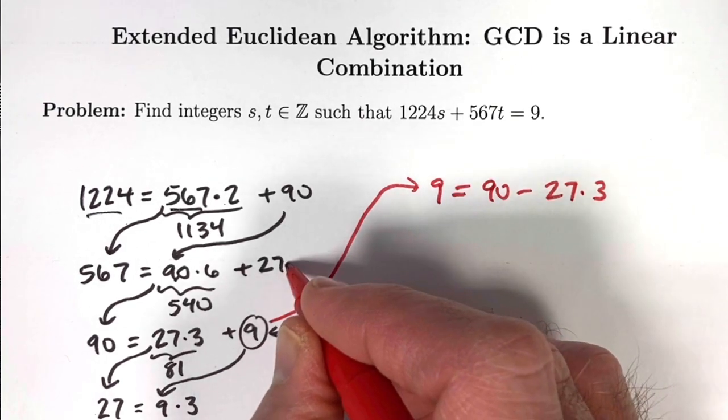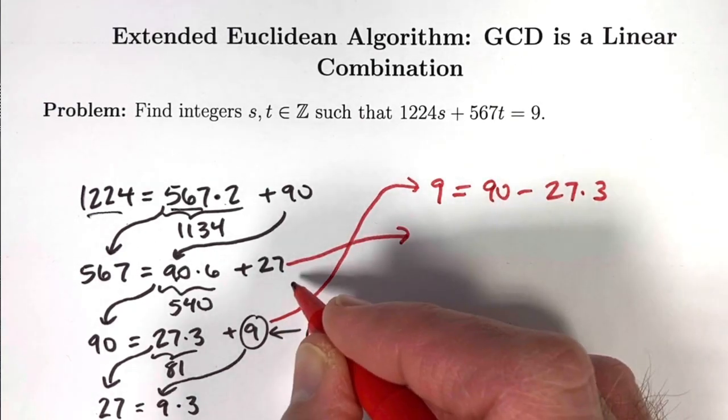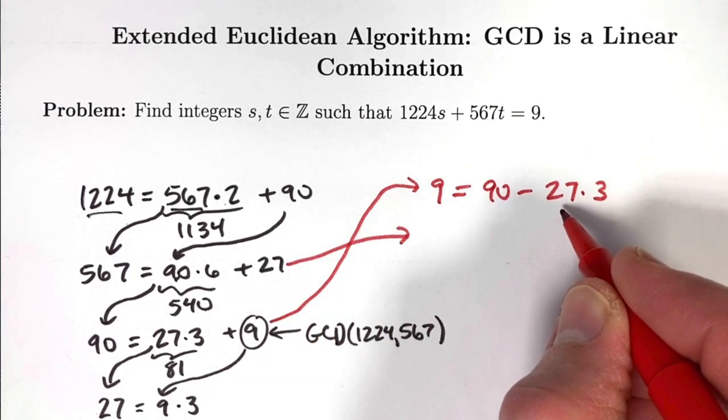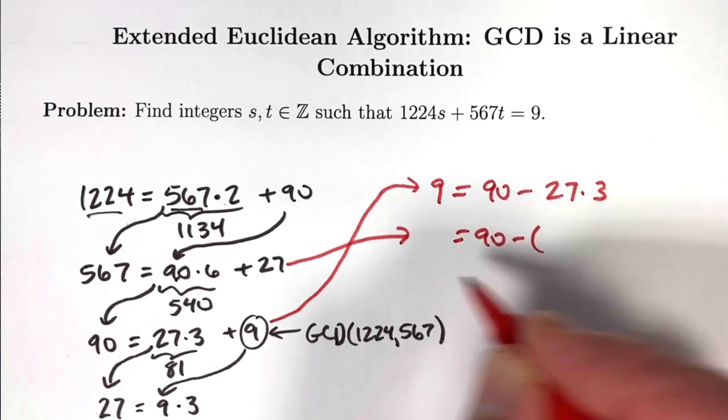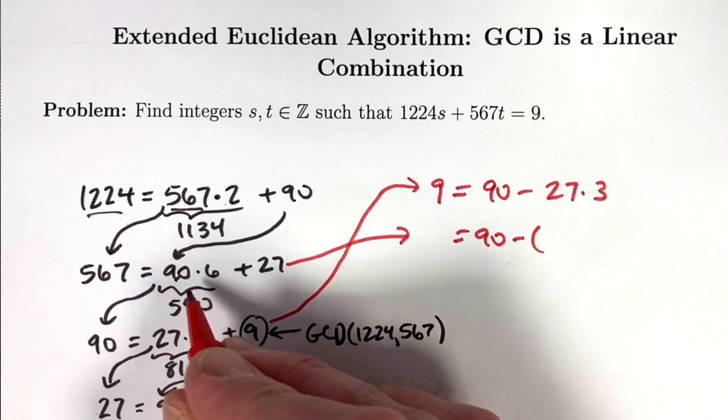Then take this equation and solve it for 27, and replace this 27 with what you get. This 27 gets replaced with 567 minus 90 times 6.